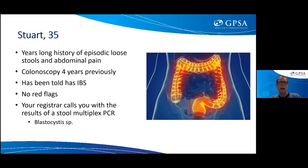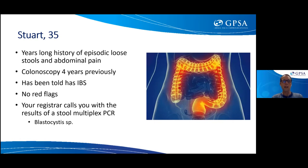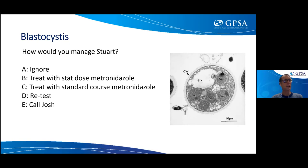Our first patient is Stuart, who has a years-long history of episodic loose stools and abdominal pain. He had a colonoscopy four years ago that was essentially normal, has a history of IBS, and no red flags. He ends up seeing your registrar, who calls you with results of a stool multiplex PCR done for ongoing symptoms — it shows blastocystis species. How would you manage Stuart, and how would you support your registrar to manage him?